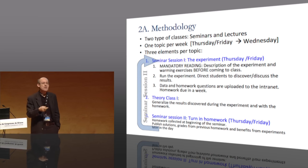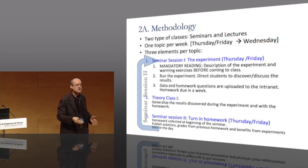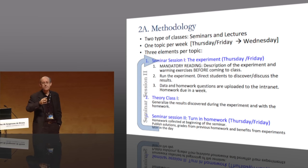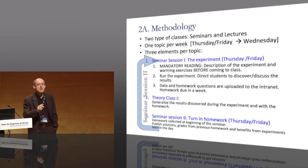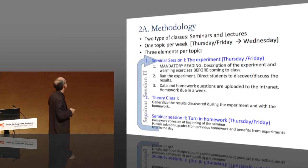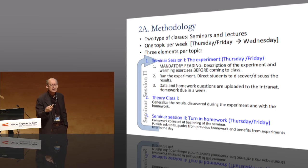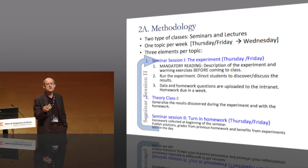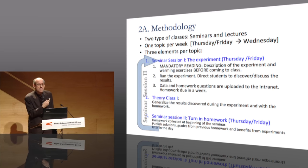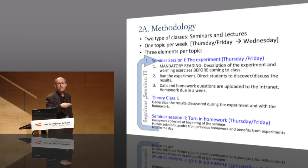Before the experiment, students read a description — just a page and a half or two pages — telling them what kind of market they're going to encounter: a labor market, a buy-and-sell market, a market with pollution, and so on. There are also a couple of warm-up exercises. Then we run the experiment, and what follows — the discussion — is important. Running the experiment is not important per se; what matters is letting students think about and discover the results, get the data, and work on the homework.